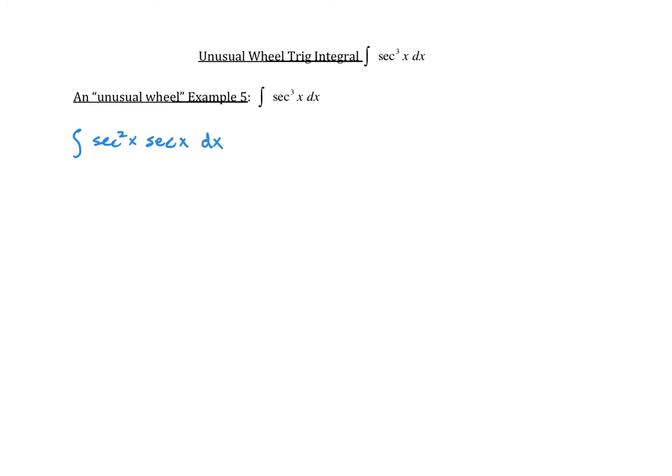The next thing I'm going to do is use integration by parts. For integration by parts, you want to choose a u and a dv. Our u in this case is going to be secant of x, and that would make our dv equal to secant squared x dx.